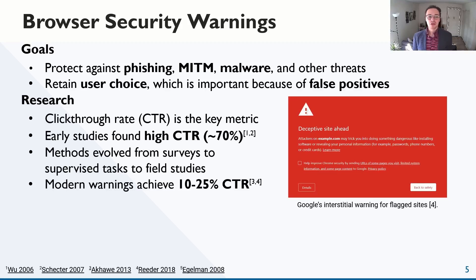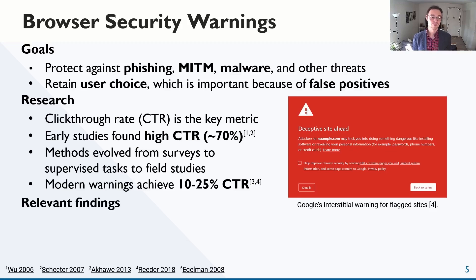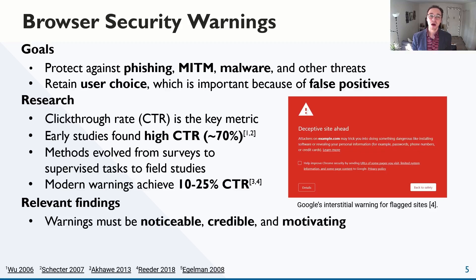Now, the threats these warnings protect against are different from disinformation, especially in terms of immediate risk to the individual. But there are also clearly parallels, and the research has relevant lessons for disinformation warnings. One key insight is about the qualities of effective warnings: they must be noticeable, so users see them; credible, so users believe them; and motivating, so users take the intended action.